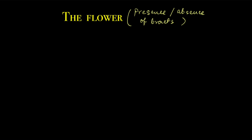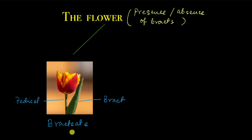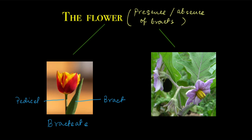Another way of classifying the flower is the presence or absence of bracts. A bract is a leaf or a modified leaf that is present at the base of the stalk of a flower. Right here is the flower, and this is the stalk also called the peduncle. At the base of the peduncle is this leaf which is called the bract. So this flower is bracteate because it has a bract. Flowers which do not have bracts are called ebracteate — there is no leaf or leaf-like structure at the base of any of the pedicels.